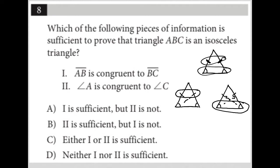So which of the following pieces of information is sufficient to prove that triangle ABC is an isosceles triangle? The first one is that AB is congruent to BC. So if I draw triangle ABC, AB is congruent to BC — that looks like the example where we have two congruent sides. So if that was all I had to work with, that would be sufficient to know that triangle ABC is an isosceles triangle. Definitely one.